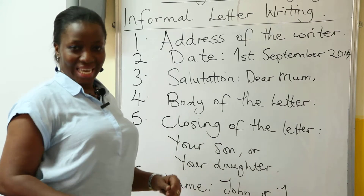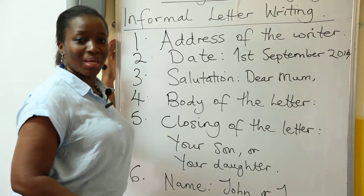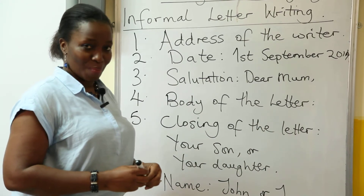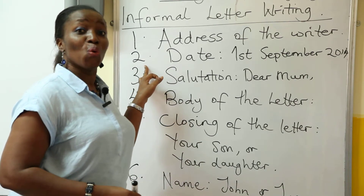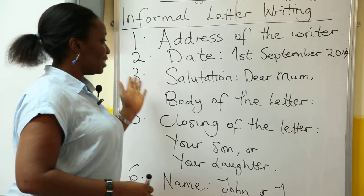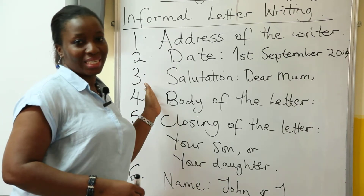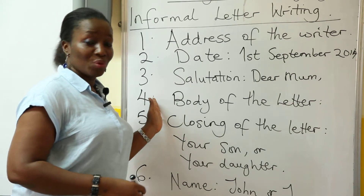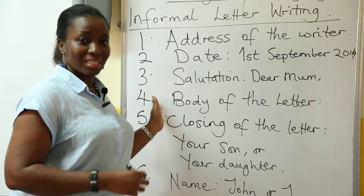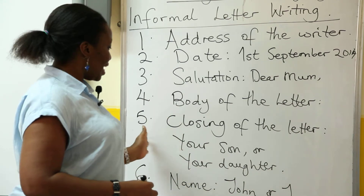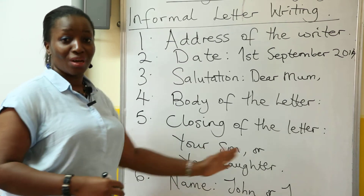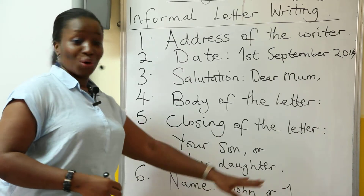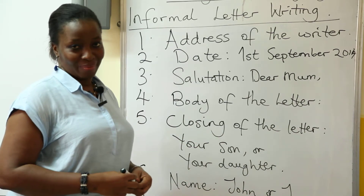Let's go through it again. The first thing you do in writing an informal letter is put the address of the writer — that's you — so they'll know where you're writing from. Then you put the date, so they'll know when the letter was written. The next thing is the salutation: dear mom, dear dad, dear friend, dear brother, dear uncle, or dear aunt. Then the body of the letter, which must be broken into paragraphs, stating what you want. Then you have the closing of the letter — your son, or your daughter — and don't forget to write your name, John, or Jane, or whatever beautiful name you bear.